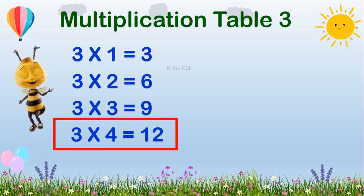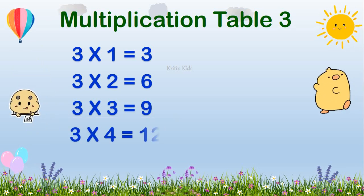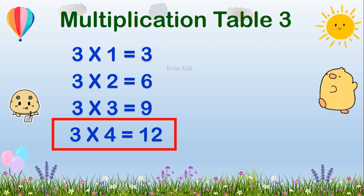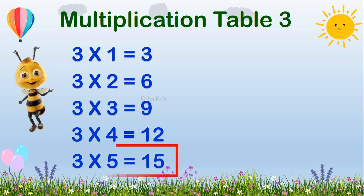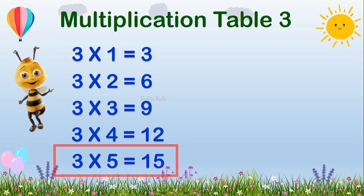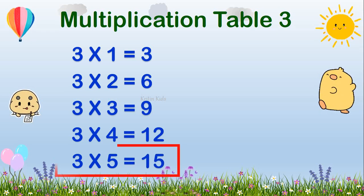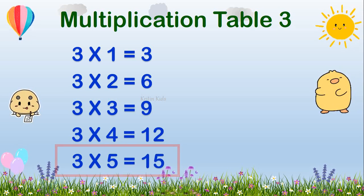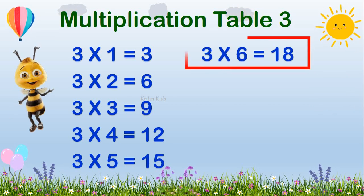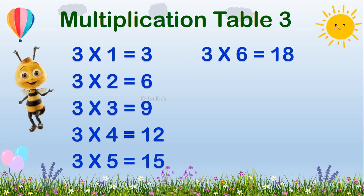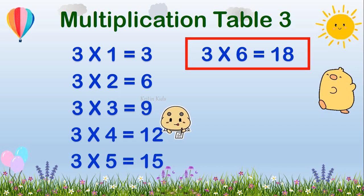Three, four's a twelve. Three, four's a twelve. Three, five's a fifteen. Three, five's a fifteen. Three, six's are eighteen. Three, six's are eighteen.